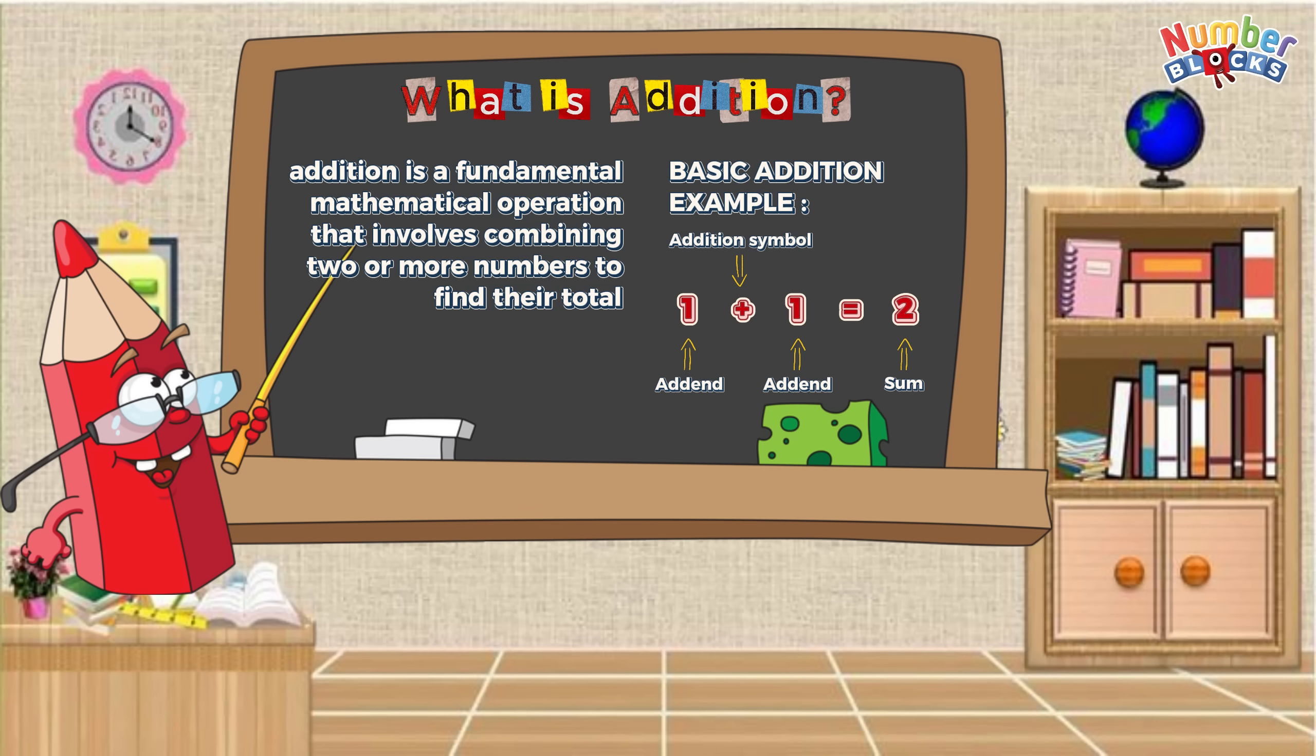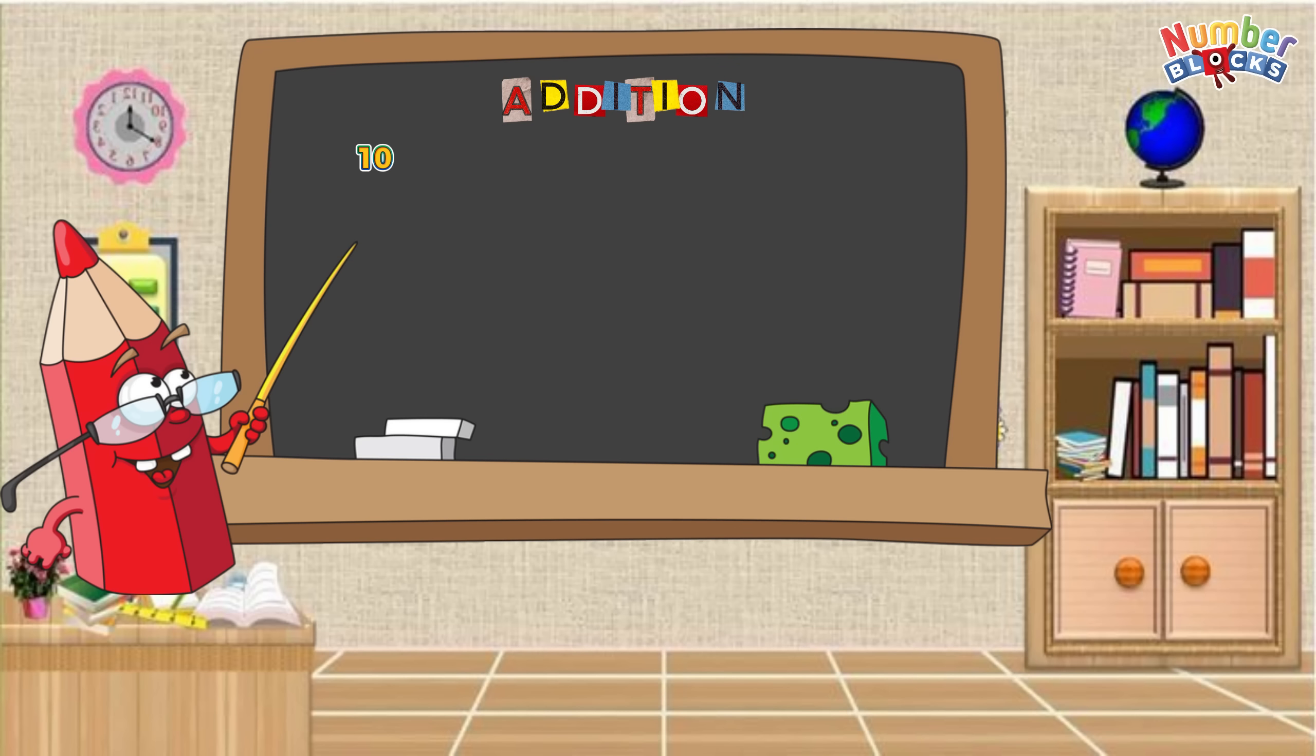Here are some examples. 100 plus 36 equals 136. 64 plus 49 equals 113. 81 plus 25 equals 106.